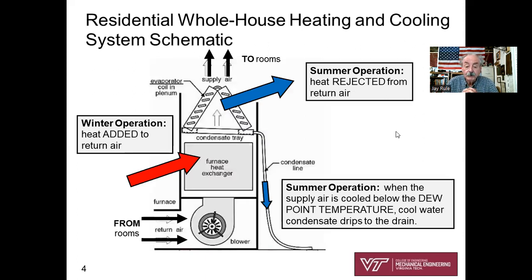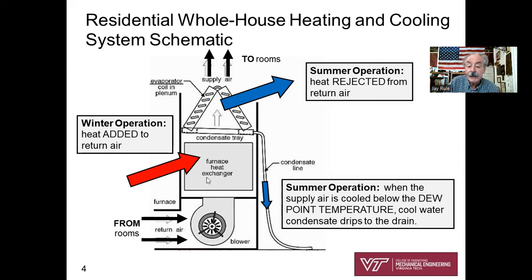Here's an overall schematic view of how a whole house HVAC system works in winter and summer — it's one piece of equipment. We start with return air coming from your rooms, air that needs to be either heated in the winter or cooled in the summer. The fan blows air upwards, and in wintertime we have a furnace section — typically natural gas and air, or electric resistance heating, or fuel oil combustion. The combustion products do not mix with the return air; it's a totally separate heating system.